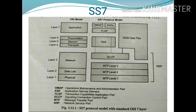MTP Level 3 represents the network layer of the OSI reference model. It provides procedures that transfer messages between signaling nodes.